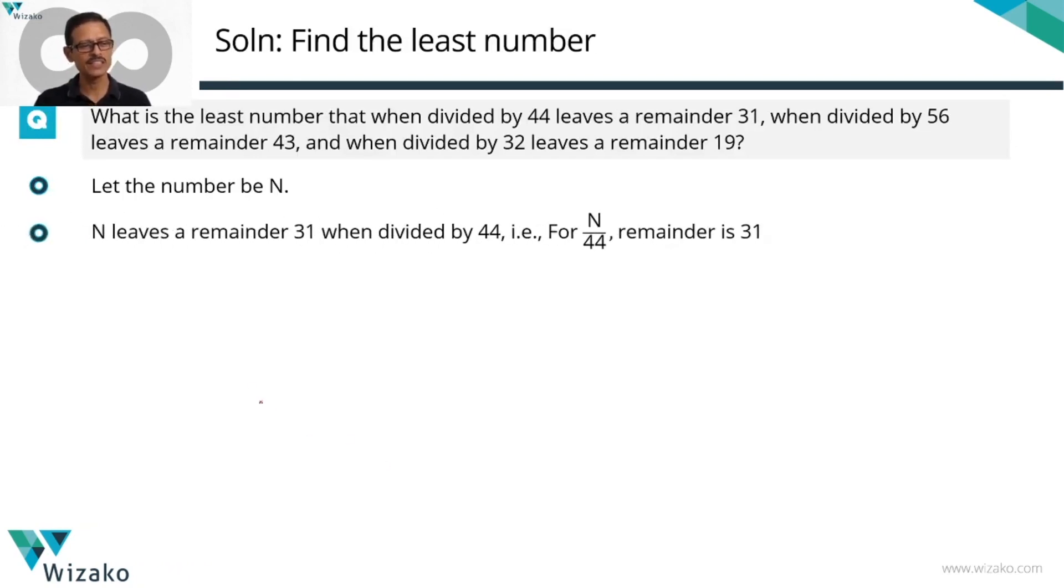Start with the first information that we have. This number when divided by 44 leaves a remainder of 31. So let's do the division. This is how the division is going to be. The N divided by 44. Let's say the quotient of this division is an A. We get a remainder which is equal to 31. So by Euclid's division algorithm, the way to write this is N can be written as 44 times A, A is a quotient, plus 31. This is what N is.